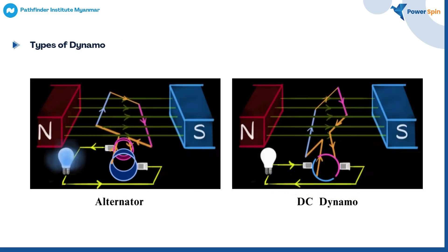Dynamos are mainly DC currents, but there are some alternators out there. Inside of a DC dynamo, the armature goes from north to south, while for the alternator, it goes from south to north. Another difference is that only DC dynamos have a split ring commutator, because the current directly flows non-stop.